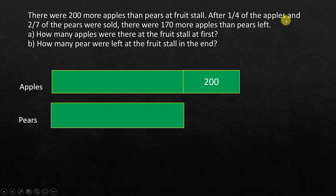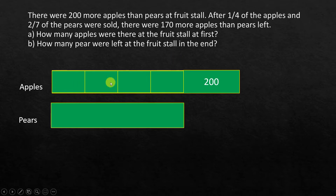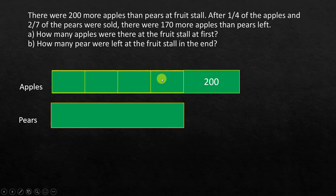After one-fourth of the apples and two over seven of the pears were sold, there were 170 more apples than pears left. Let's look at the first part: after one-fourth of the apples were sold, we had two portions — the actual quantity here is known, whereas this was an unknown quantity. So we divide the unknown part into four equal sized units and take out one of them because that was sold.